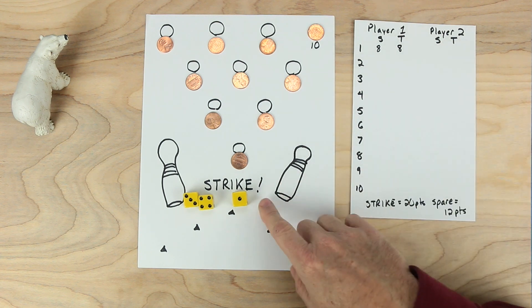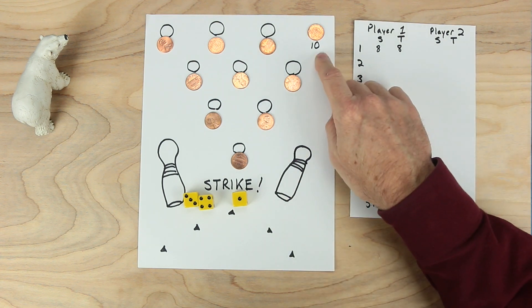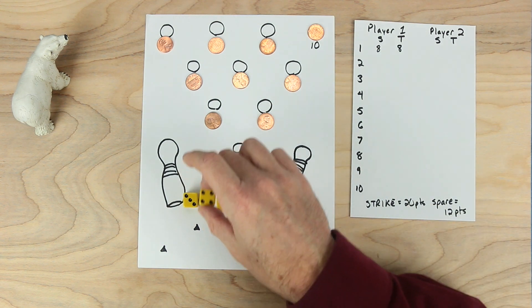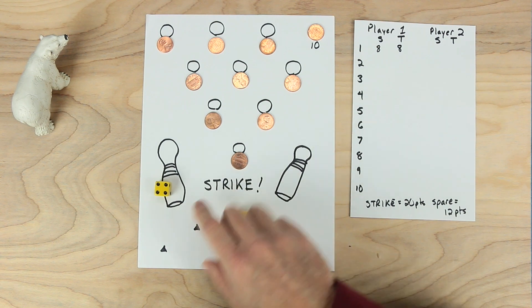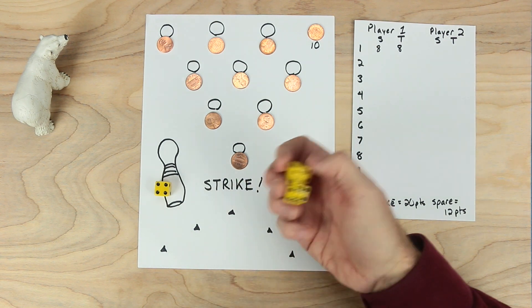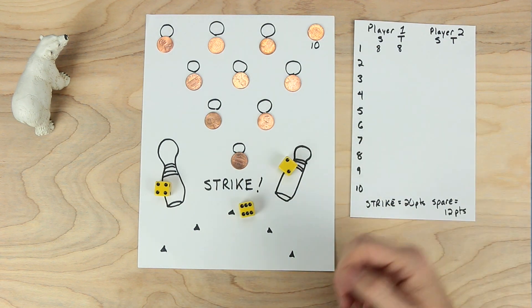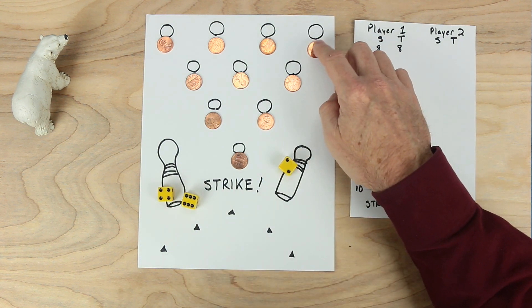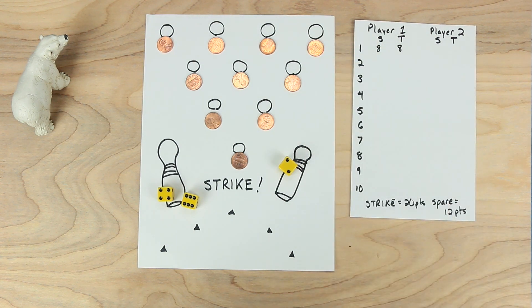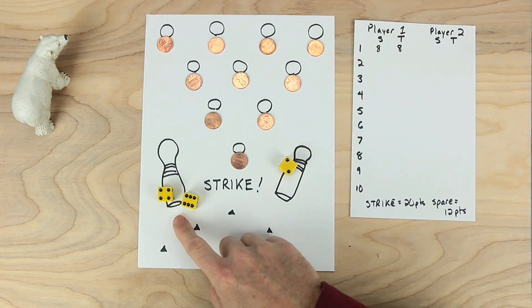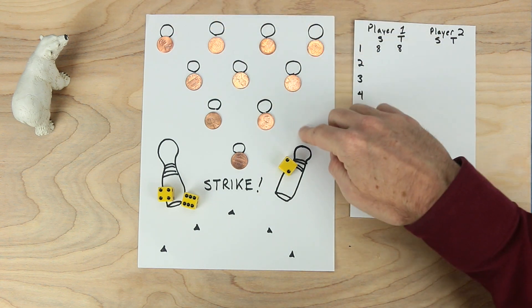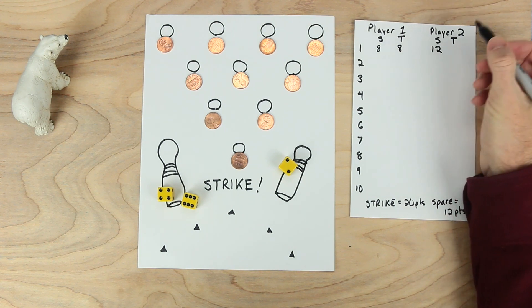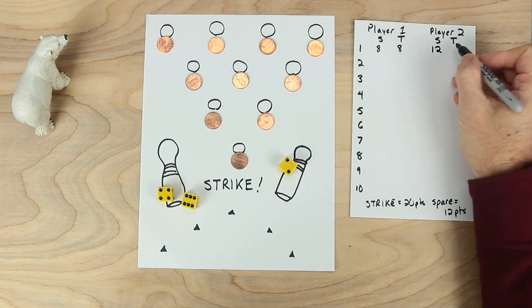Can player two make a spare this time by taking out the last one? Remember, a spare gives 12 points. So player two likes the number four, hoping for some kind of six-ish number. Player two rolls again, and there's the six. Six and four makes ten. On the second turn, player two was able to make the ten. And because they made a spare, meaning in two turns got all ten of them, they're going to get 12 points. Player two has 12 points.